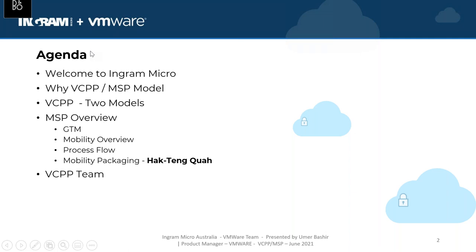Today's agenda: we will be talking about the two models that VCPP has, the go-to-market strategies that companies have been using, the process flows, and then the most important part of today's presentation — the packaging of how you can make the most out of the mobility offering. If you're already using Workspace ONE or already in this MSP program but running out of ideas for revenue streams, we have Khoa to walk you through that. At the end I'll talk about the VCPP team at Ingram Micro — our dedicated VDMs, solution architects, and product management.